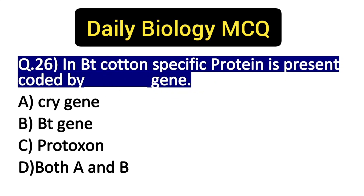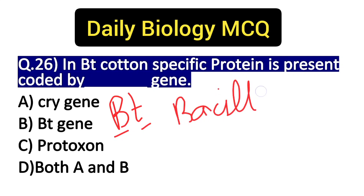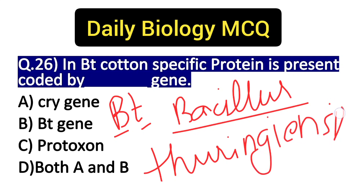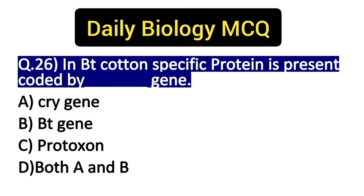BT cotton एक insect resistant plant है। इसमें B और T stand करते हैं specific organism के लिए जो कि एक microbe है, that is bacteria, और उसका नाम है Bacillus — B for Bacillus and T for thuringiensis. ये नाम आपको ध्यान में रखना है क्योंकि इससे अलग से भी question बन सकता है। ये एक bacterial species है।